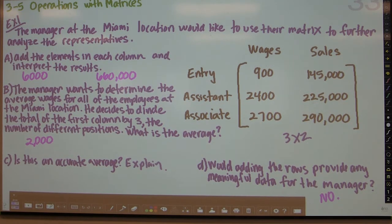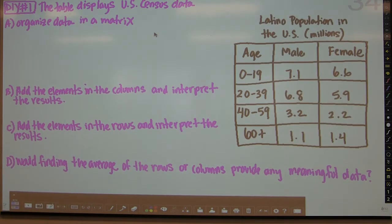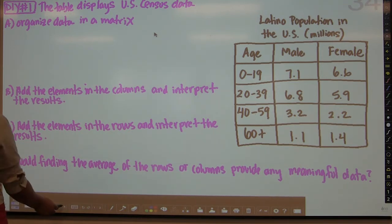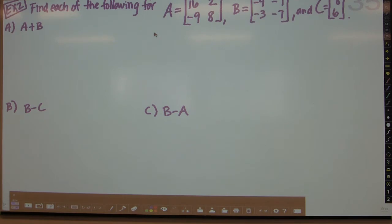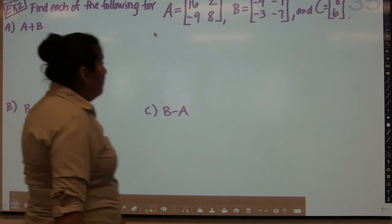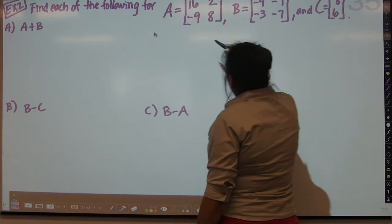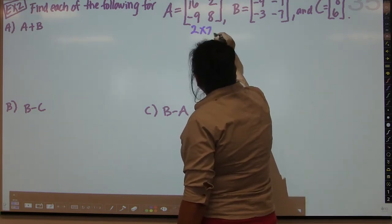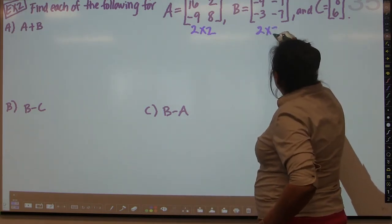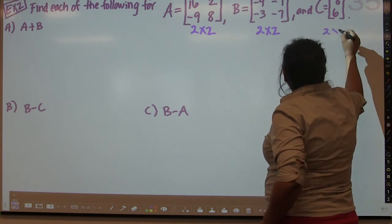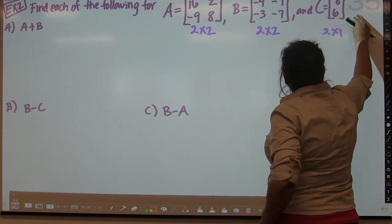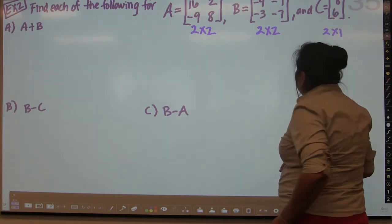Now we're going to give you a chance to analyze a matrix on your own. After that, we'll get to the main content — adding and subtracting matrices. Earlier we talked about the dimensions of matrices. Matrix A has two rows and two columns, so it's a two-by-two. B is also a two-by-two. C is a two-by-one — it has two rows but only one column.